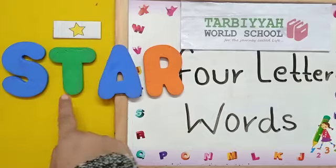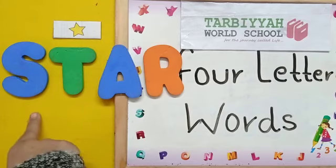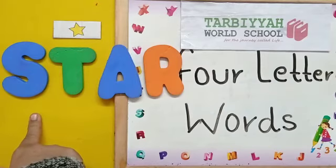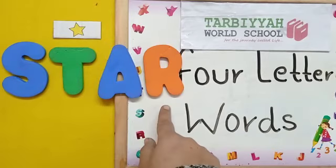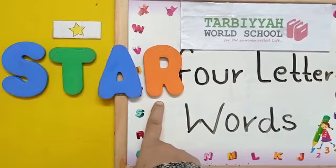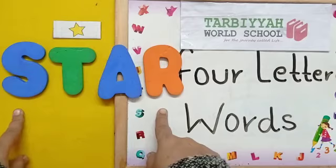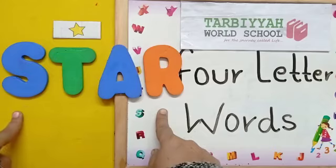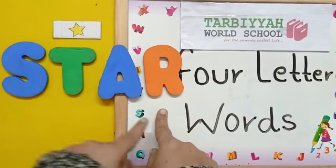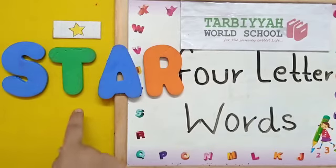So, what is the beginning sound of the word star? Star — S. S, S, S. And the ending sound of the word star — R, R. Repeat with me: the beginning sound of the word star is S, and the ending sound is R. So, it's star — S T A R — Star.